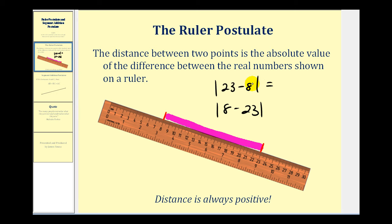Well, twenty-three minus eight is going to give us fifteen and the absolute value of fifteen is fifteen. And eight minus twenty-three is going to give us negative fifteen, but the absolute value of negative fifteen is still positive fifteen. So regardless of the order of the subtraction, because we're taking the absolute value, it will always be positive. And that's good because distance is always positive.